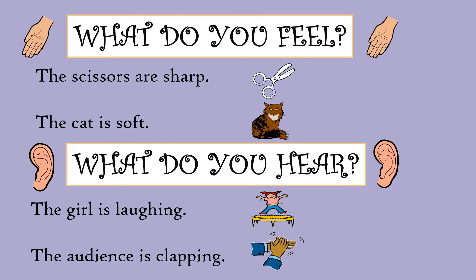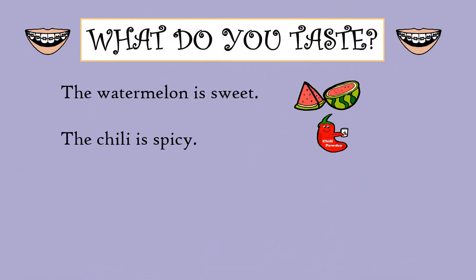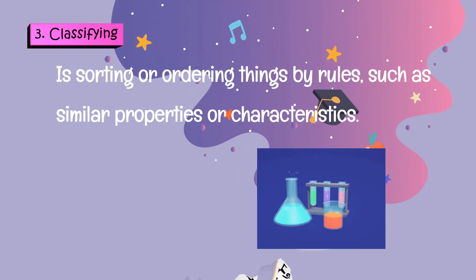The audience is clapping. What do you taste? The watermelon is sweet; the chili is spicy. Number three, classifying: sorting or ordering things by rules, such as similar properties or characteristics.